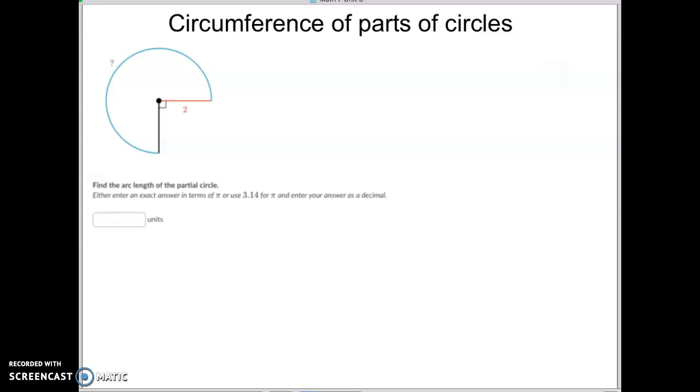It's called circumference of parts of circles. It's really the same as finding the circumference of a circle, but then you just have to figure out what portion of a circle they gave you.